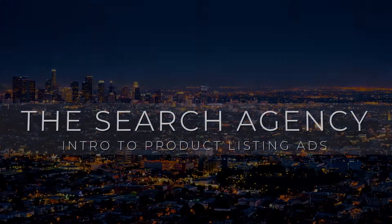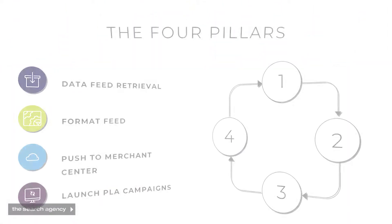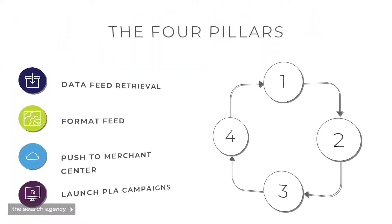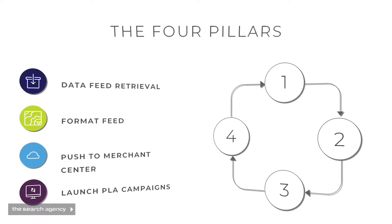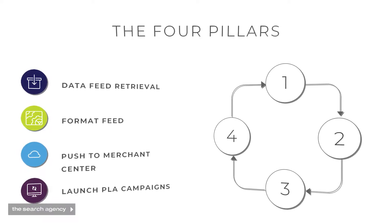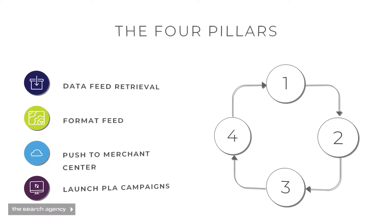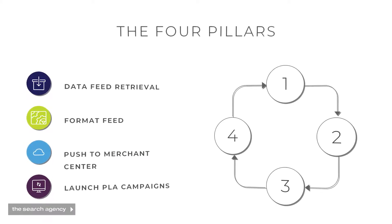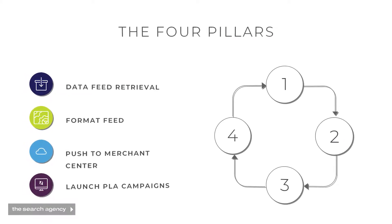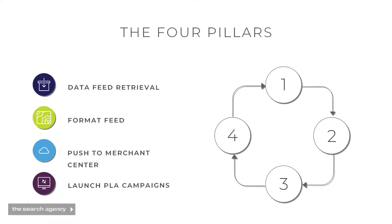Hello everyone and thanks for joining us today. My name is Dennis and I'm a senior account manager at the search agency. Today we're going to be talking about the core requirements needed to launch your first product listing campaigns. There are four key pillars required before you can launch a shopping campaign: retrieving your client's raw data, formatting the data feed, exporting it to the Merchant Center, and creating your shopping campaigns.